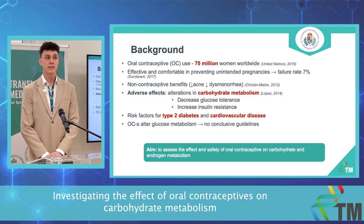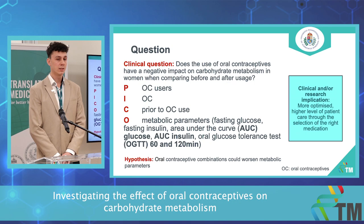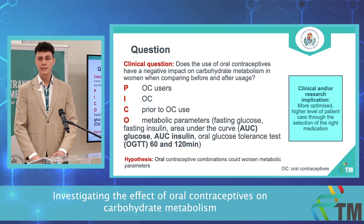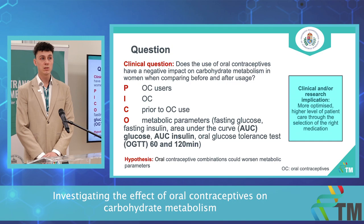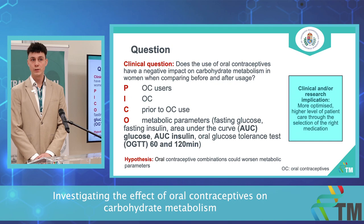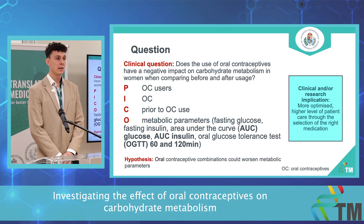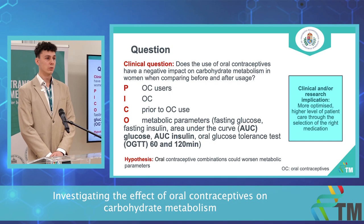So we aim to assess the effect and safety of these medications on carbohydrate metabolism. Our population would be oral contraceptive users. We would be doing a before-and-after comparison, so our intervention would be oral contraceptives, and our outcomes would be the metabolic parameters connected to carbohydrate metabolism: fasting glucose, fasting insulin, a glucose tolerance test ideally at 30, 60, and 120-minute marks, and the area under the curve for that test.